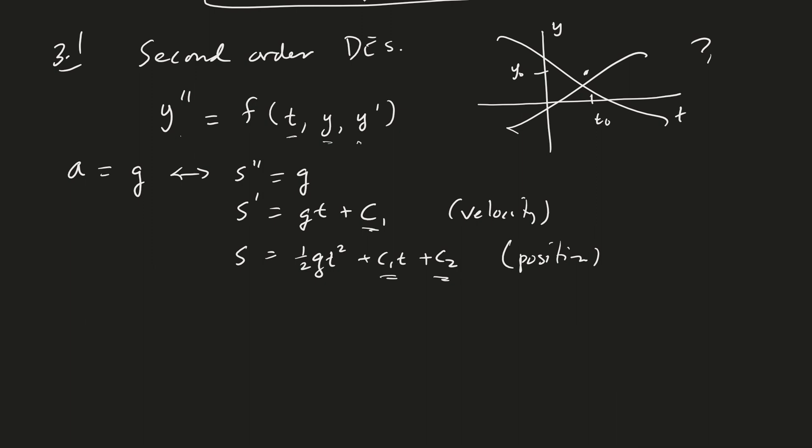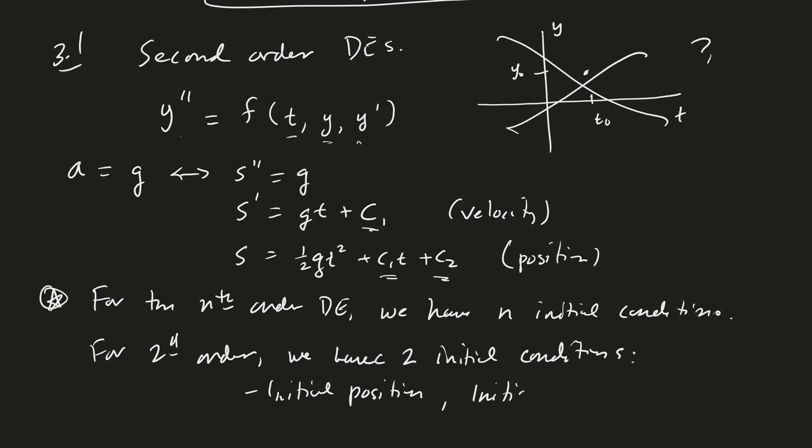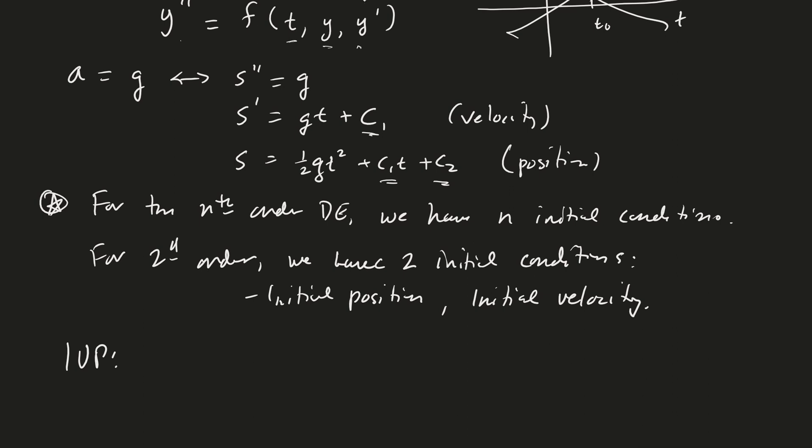And so you'll notice now what happened is that instead of just having one arbitrary constant like we had in a first order differential equation, we now have two arbitrary constants. And so just as a note here, for the nth order differential equation, we have n initial conditions, right? So for second order, this typically means we have two initial conditions, and those initial conditions are initial position and initial velocity.